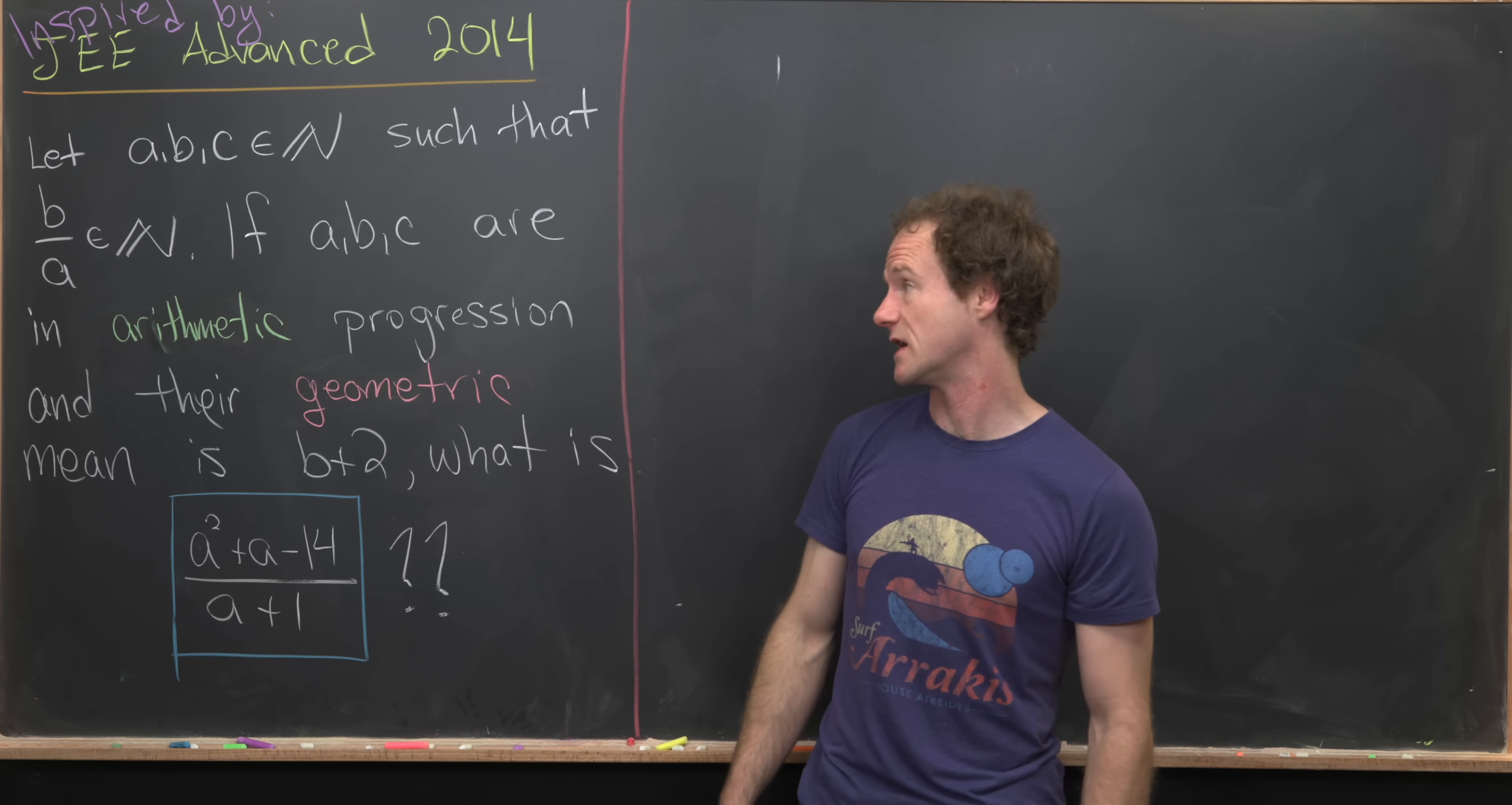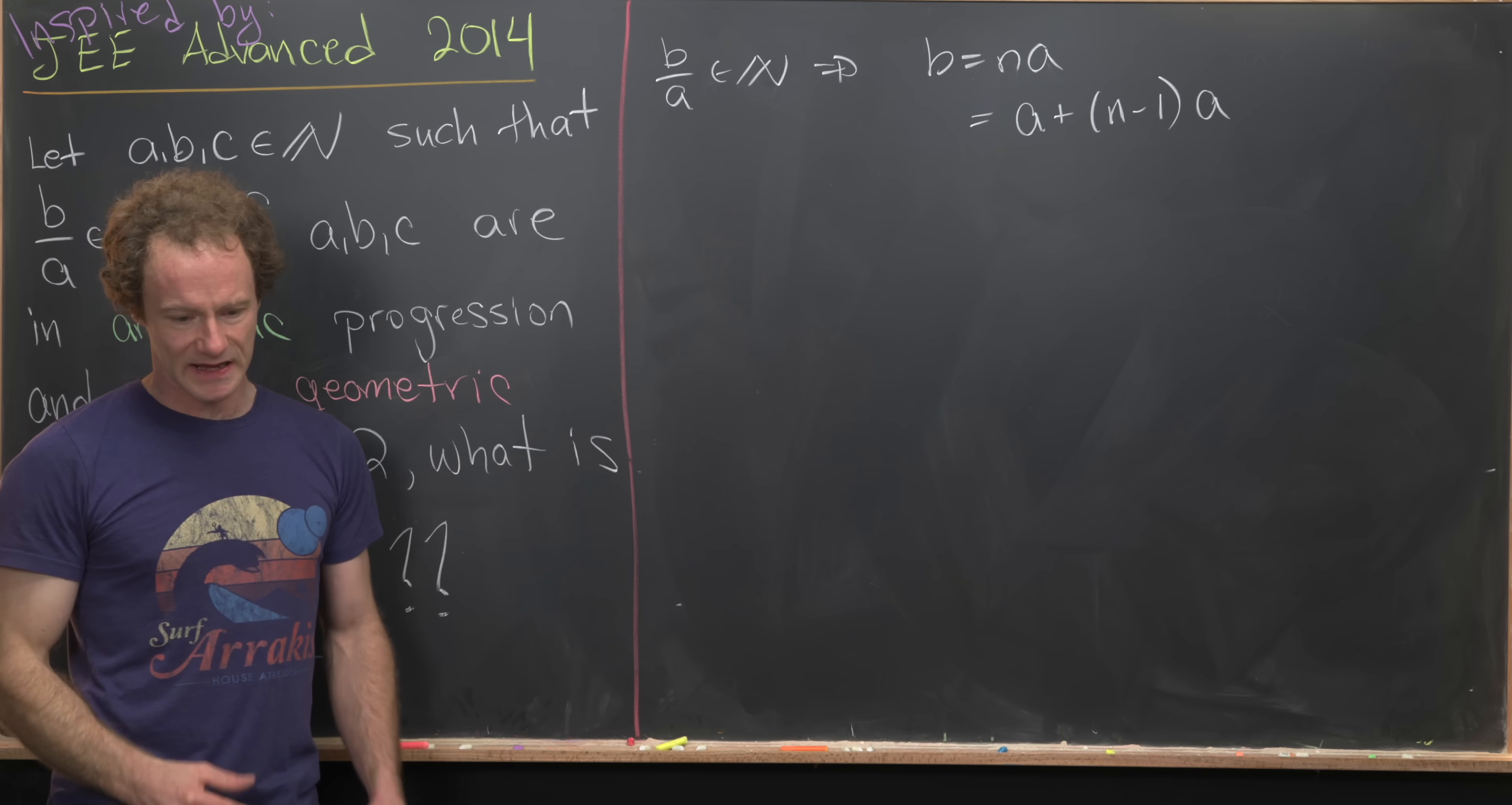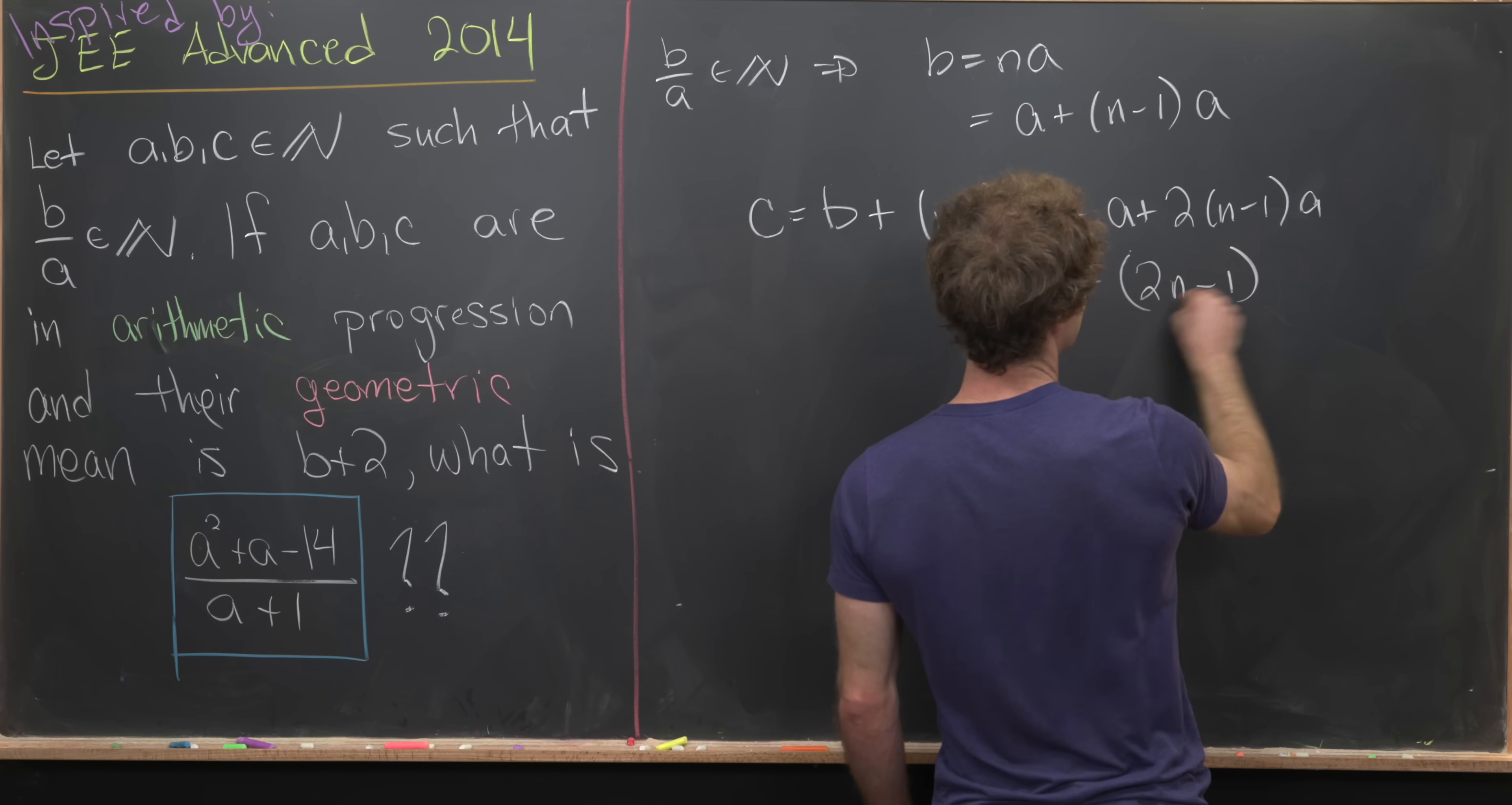Now I've changed the word arithmetic and geometric to see if we could maybe get a similar result. So now this is inspired by this exam. So we'll start off with the same setup. So we've got B over A is a natural number. So that tells us that B equals N times A. But let's notice that N times A is equal to A plus N minus 1 times A. So this N minus 1 times A is like this common addition factor that is creating our arithmetic progression.